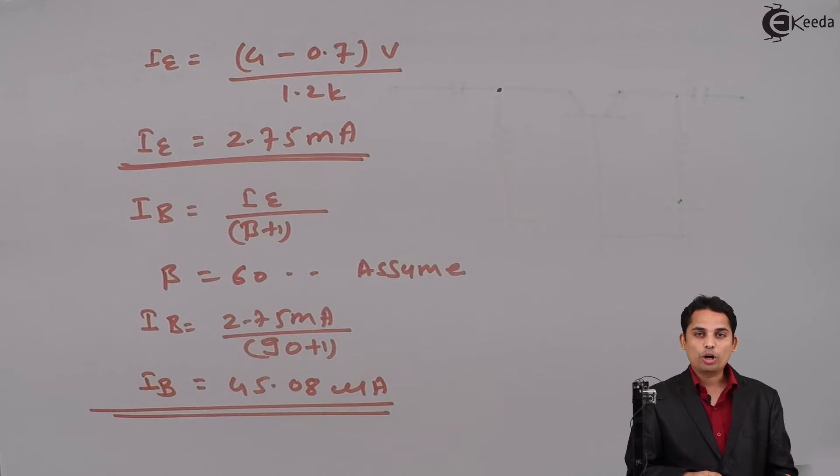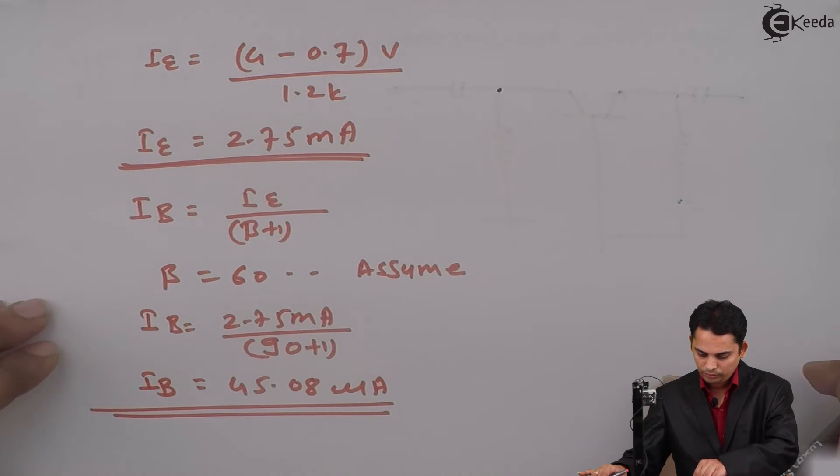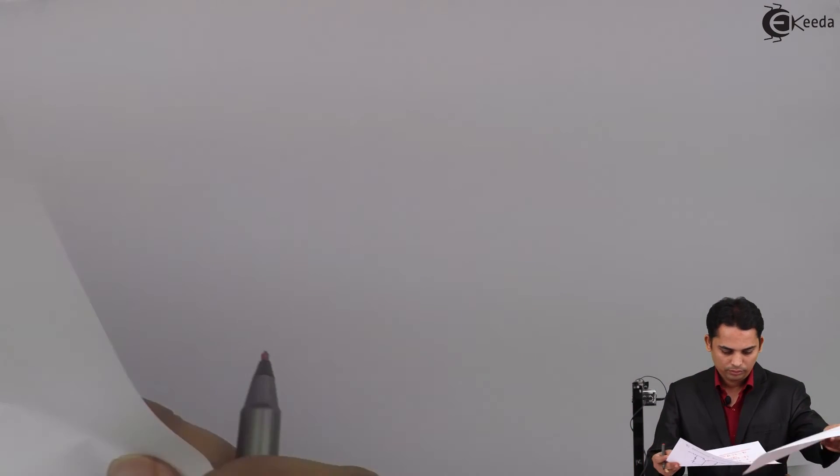We have got emitter current IE and base current IB. Next, they have asked you to find out VCE and VCB.